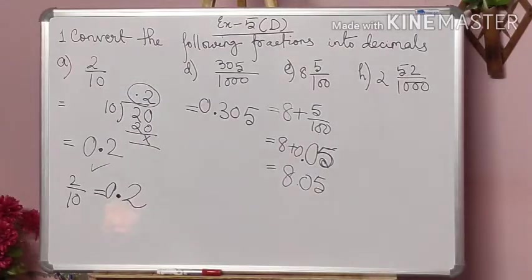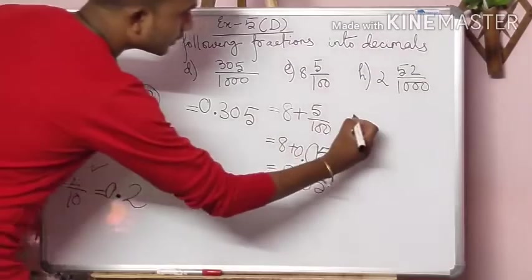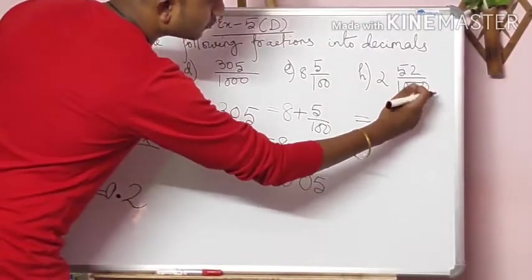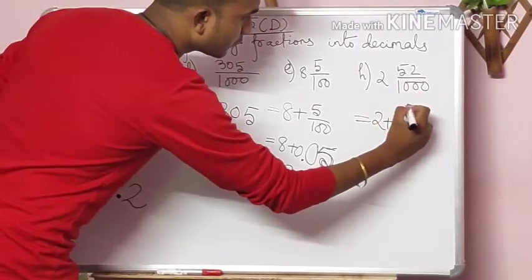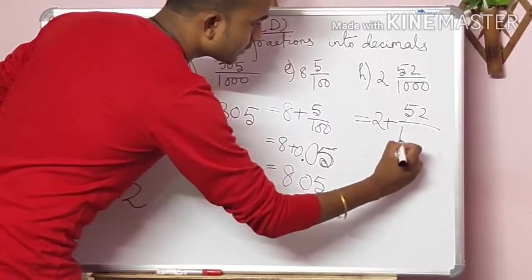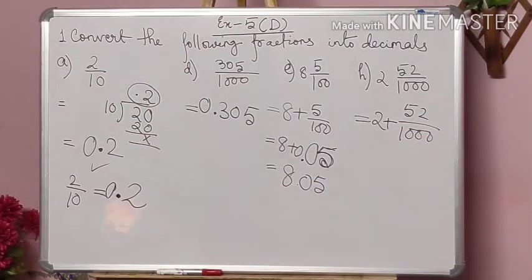Now, two zeros were present, so I have given two numbers. As soon as I have given two numbers, I can use one decimal here. So I can write that 8 plus 0.05 can be added directly as 8.05. Wasn't that easy? I hope you got this. Again, in number H, it is the same type of question.